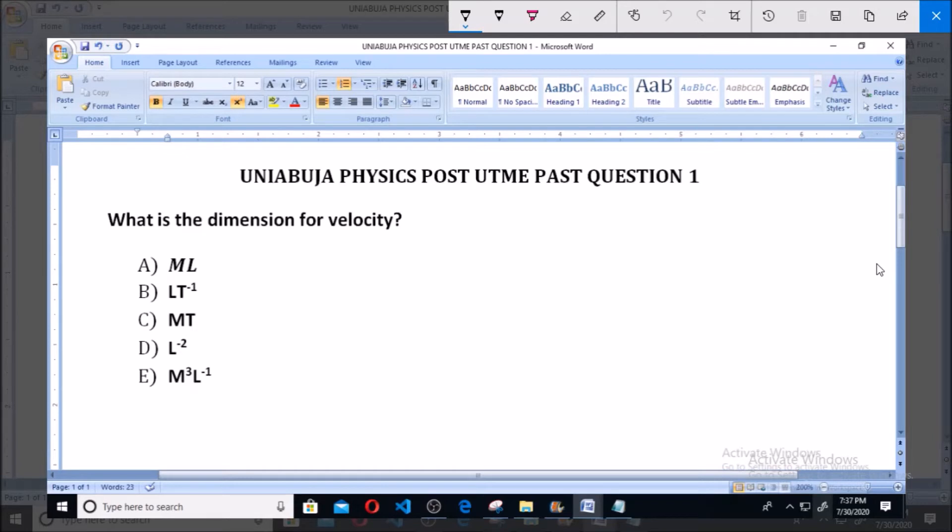So this question falls under the topic of dimension analysis. And in dimension analysis, in physics, you make use of the units of the quantity given to determine the dimension. In other words, when you want to determine the dimension of any quantity, whether velocity, acceleration, or any other quantity, momentum, impulse, you use the unit. First of all, determine the unit of that dimension before proceeding to get or to obtain the dimension from the unit. So, how do you do this?